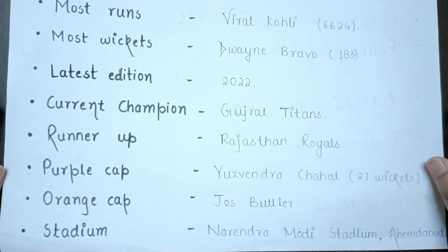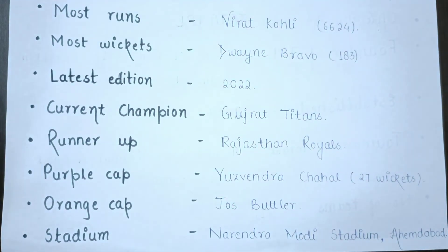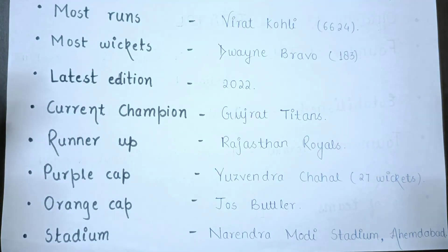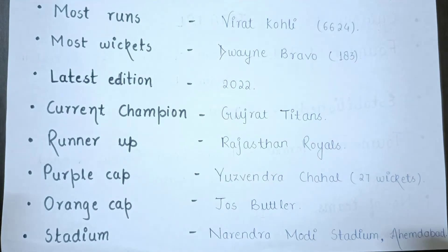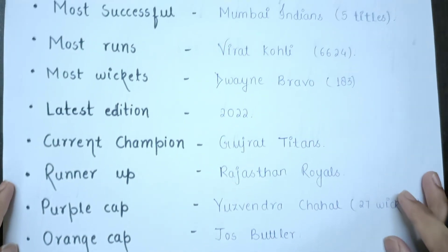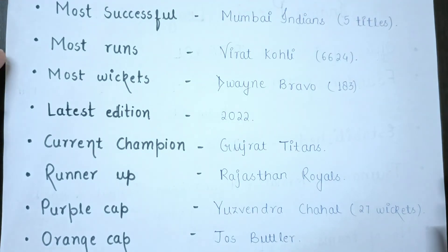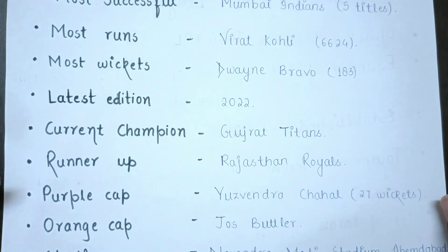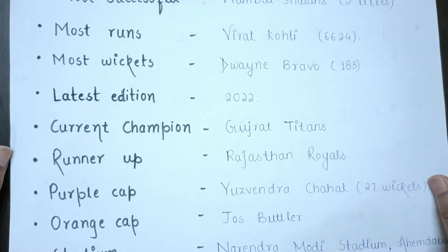These are the most important points you need to know for exams. Key questions include: who is the most successful team, who scored the most runs, who took the most wickets, who is the current champion, who was the runner-up, and who got the purple cap and orange cap. These questions have a high chance of being asked.